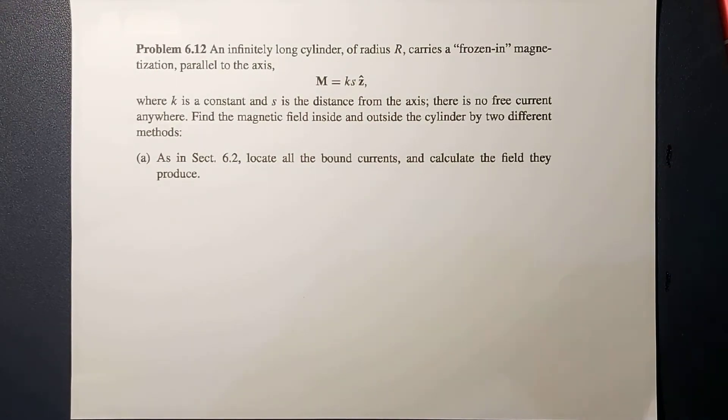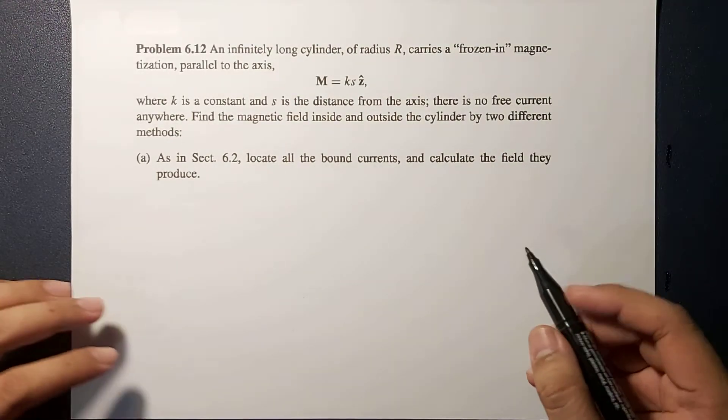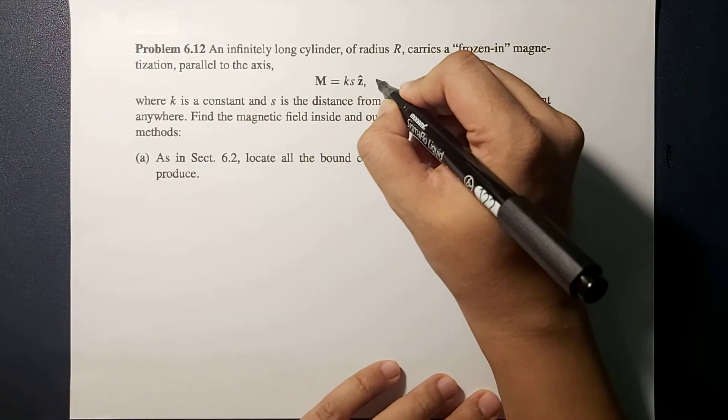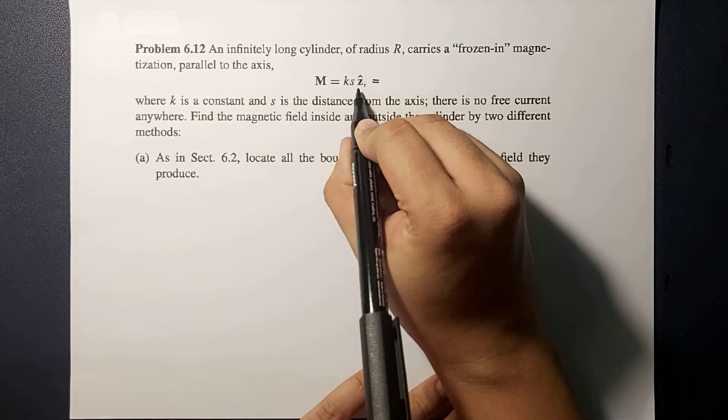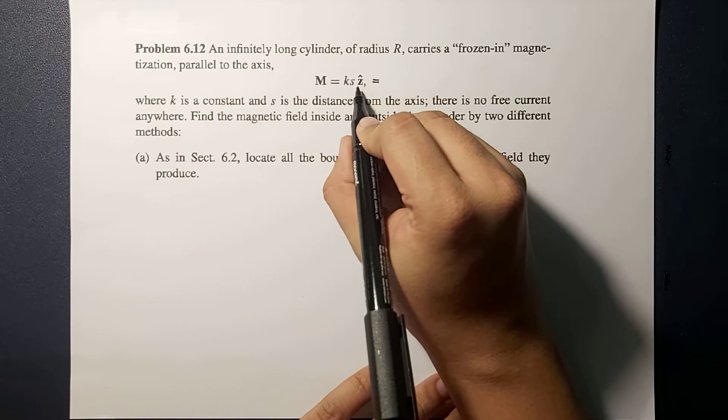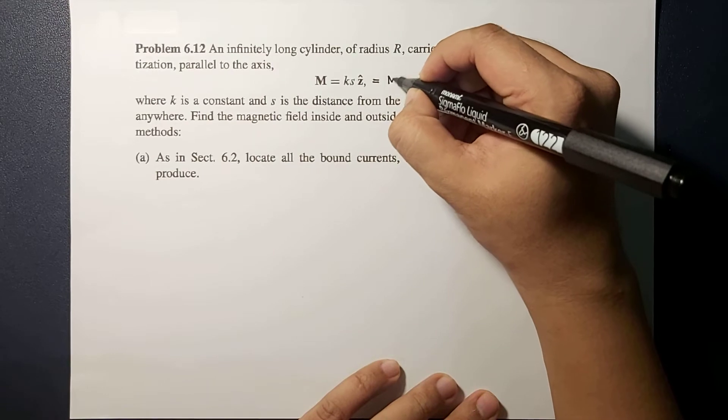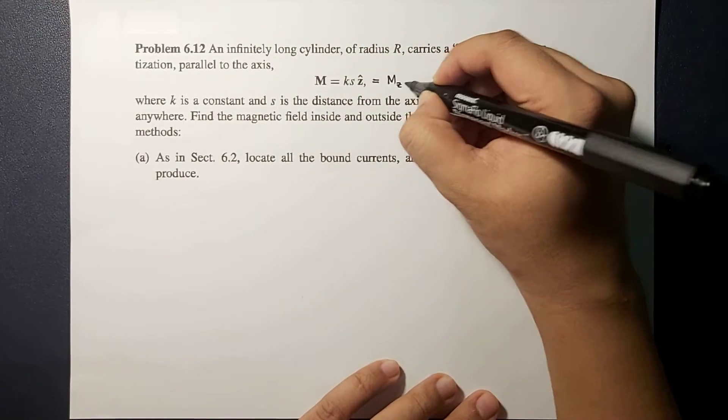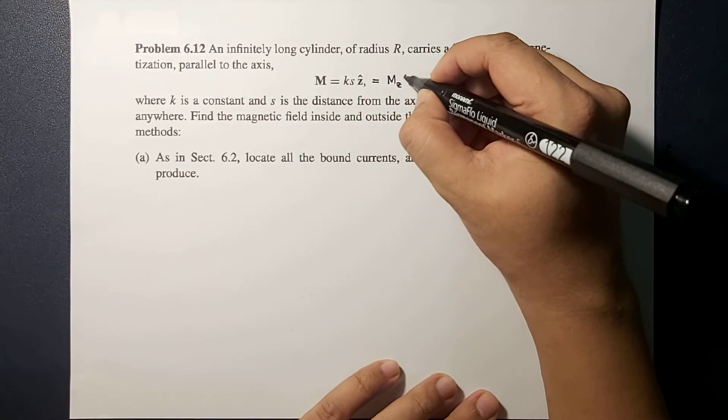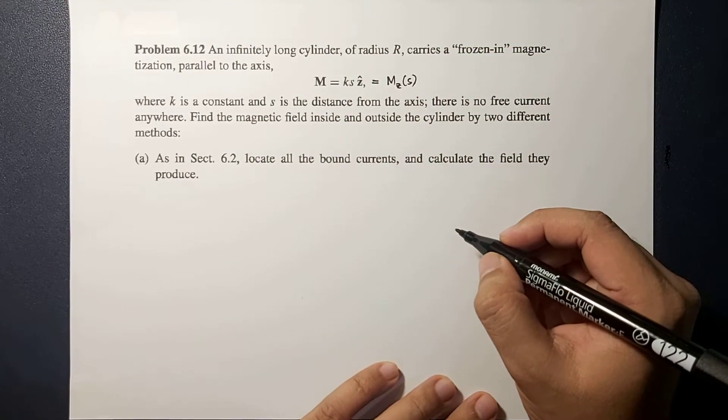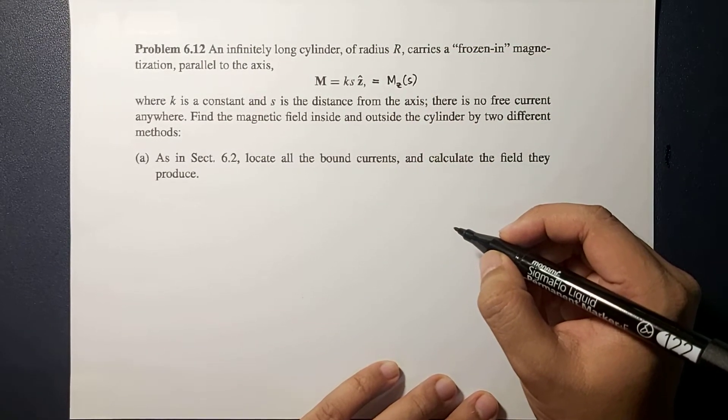So here we have a problem involving magnetization. First thing we need to identify is you will notice that the magnetization is directed in one direction, and that's the Z direction. So the component of the magnetization is along Z, and that is a function of the distance of your point from your axis.